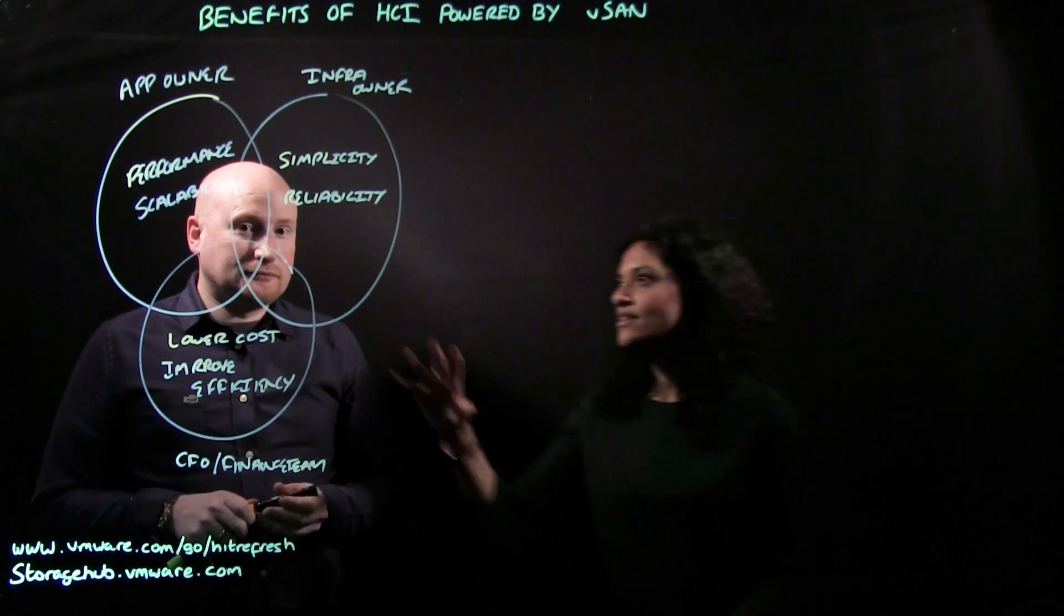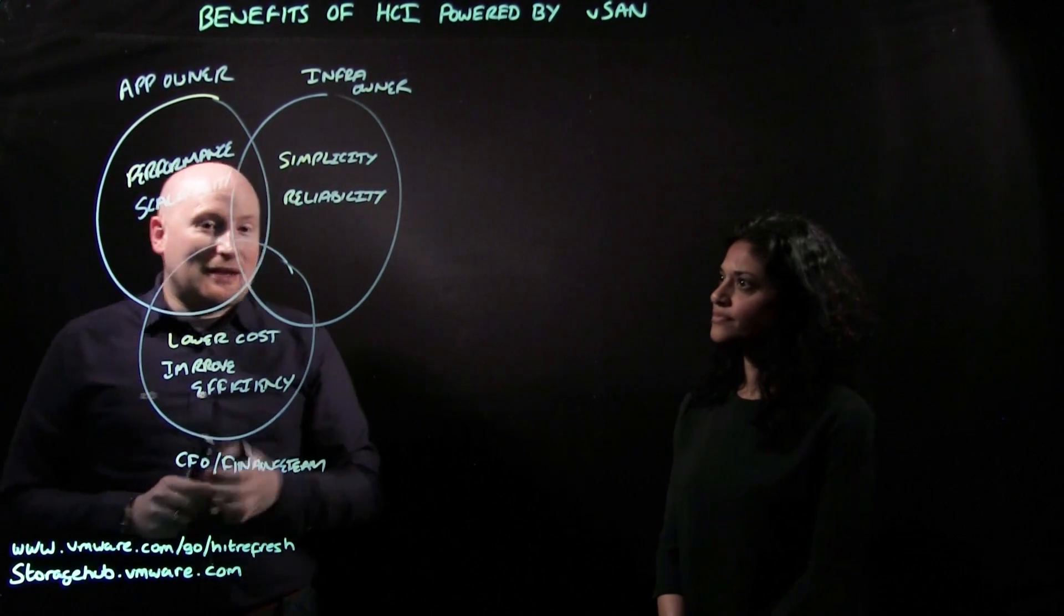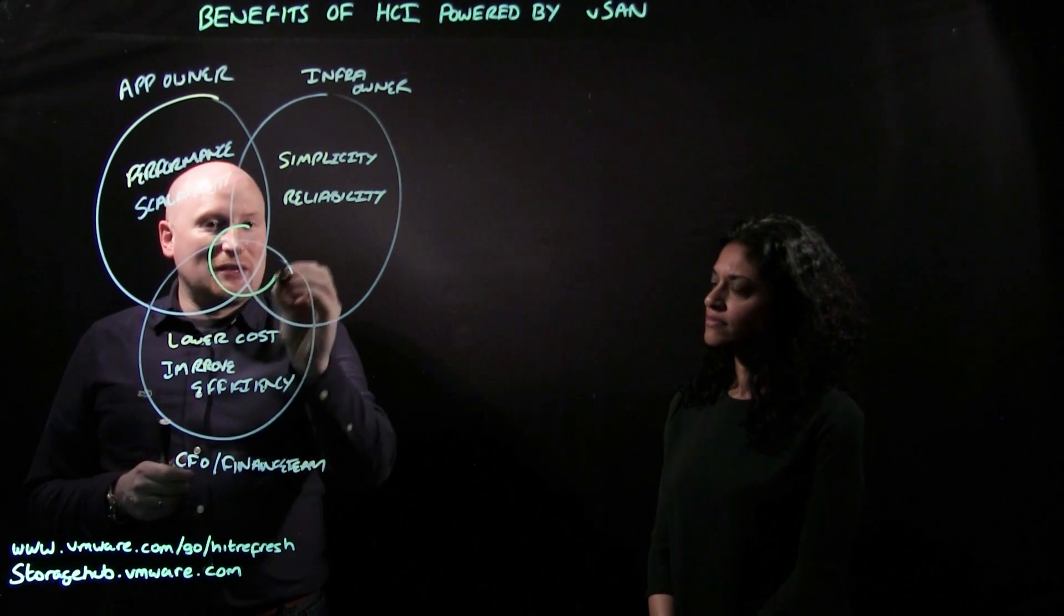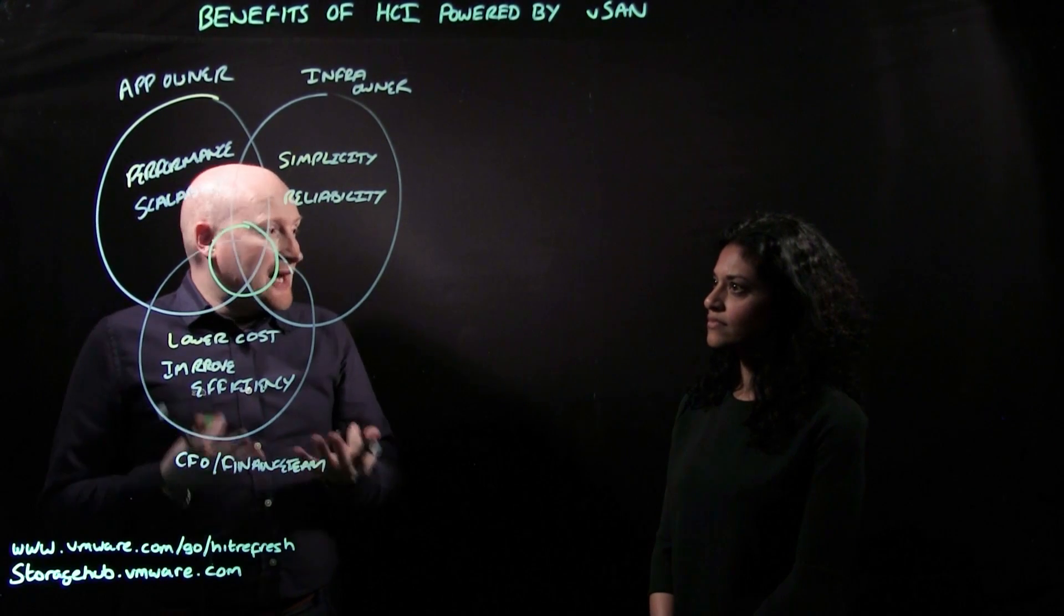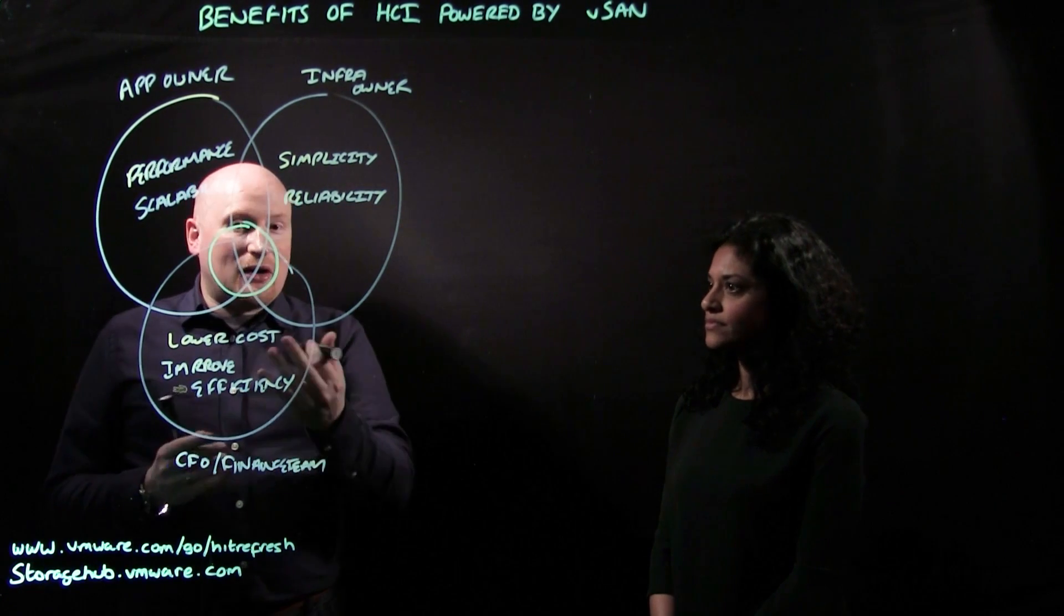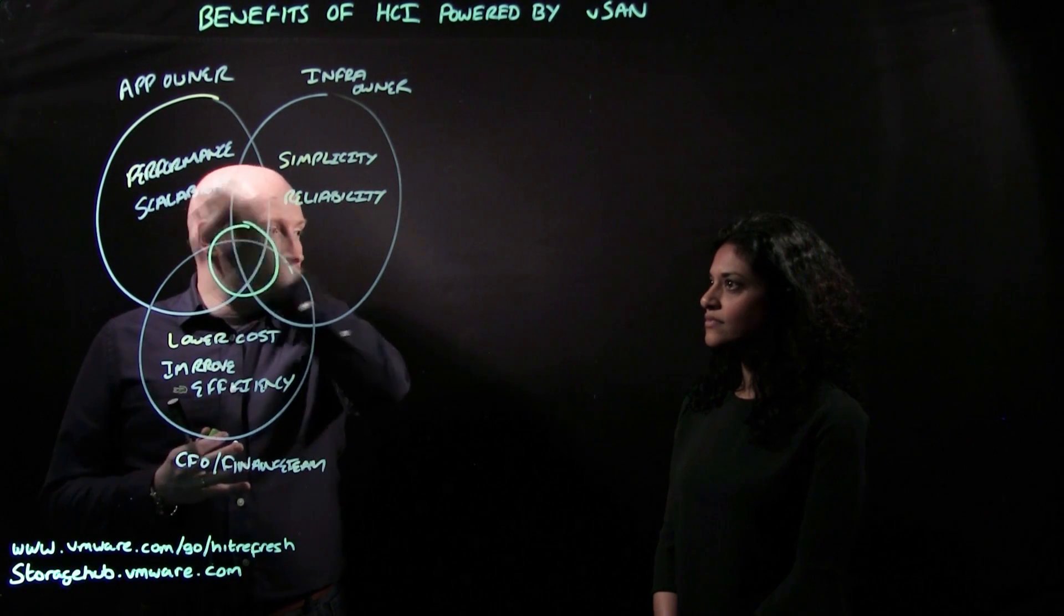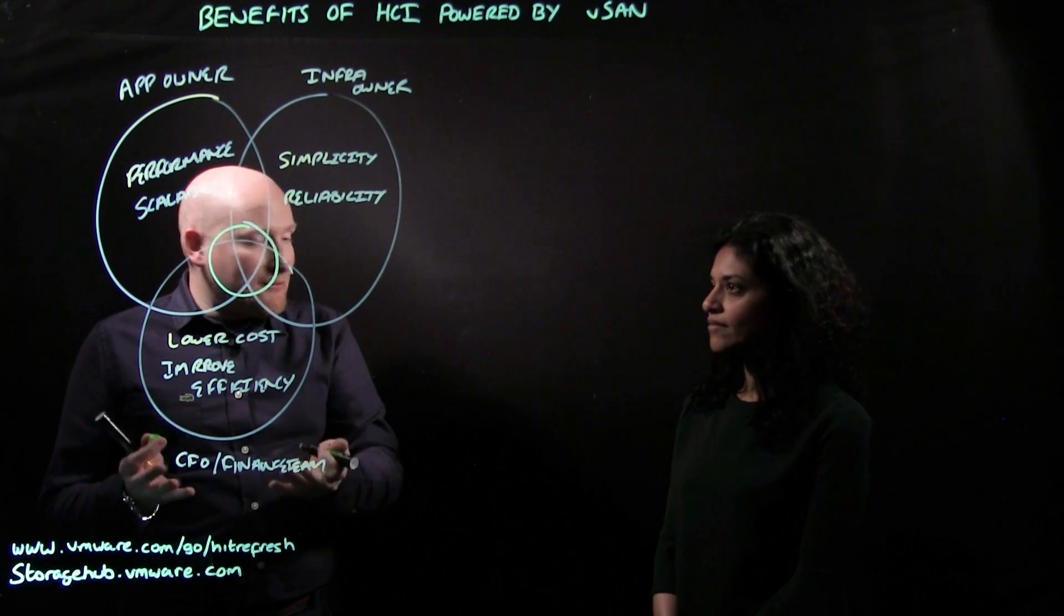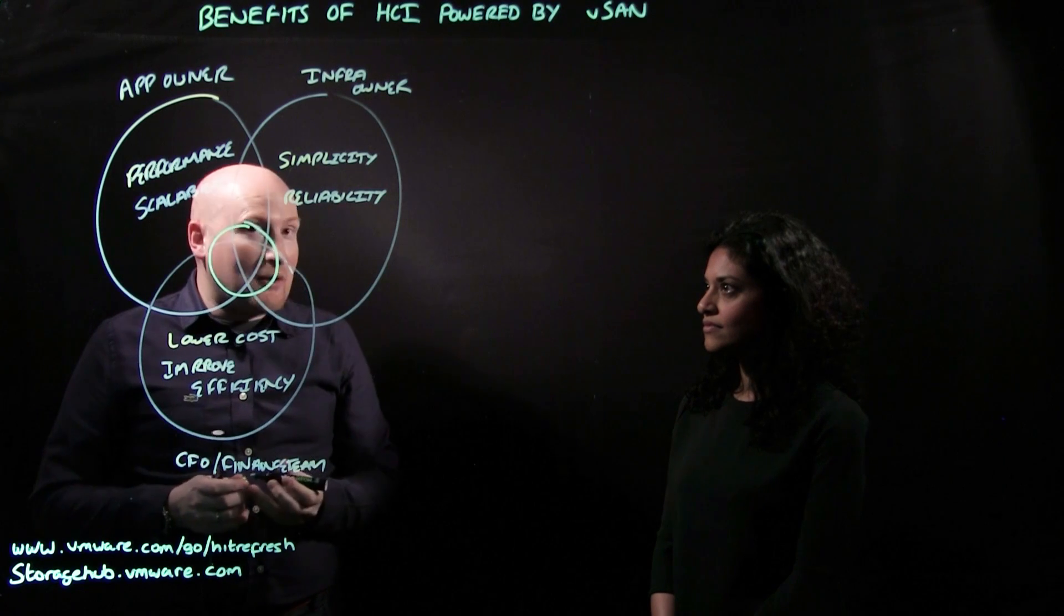So clearly, Simon, there's a significant overlap here. What does that mean? Yes, each one of these circles converges in the middle, and this convergence in the middle is a sweet spot where everybody is trying to get to. And with typical legacy infrastructure, you can't get to this bit in the middle because there has to be a sacrifice. And usually because the loudest drum comes from the application owner and the infrastructure owner, it's usually the finance team or the CFO that has to back down on their requirements.